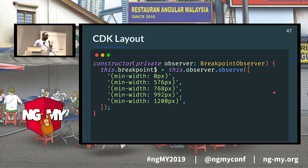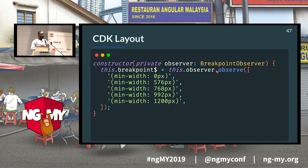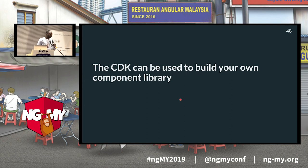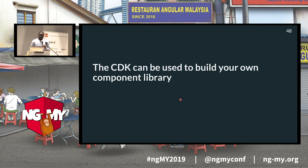Here's an example of CDK Layout. I inject a service called BreakpointObserver and invoke a method that returns an observable with information about the viewport. I pass in multiple media queries, and the observable tells me which ones are true. On small devices only the first one — min-width 0 pixels — is true, but on large devices all queries are true. I can then use this information to handle layout programmatically in TypeScript rather than in HTML. The CDK can be used to build your own design system if you don't want Material Design — it helps avoid reinventing the wheel every time.